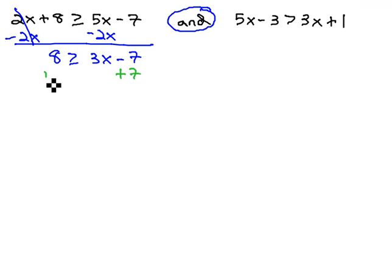Next, we can add 7 to both sides as we work to isolate the x, giving us 15 is greater than or equal to 3x. Finally, dividing both sides by 3 gives us 5 is greater than or equal to x.